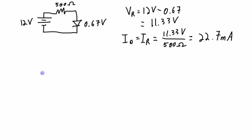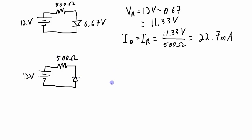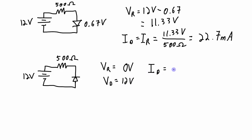What if we have a reverse biased diode? Same circuit, but with the diode turned around. In this case, there will be no current in the circuit because the diode acts like an open. The voltage across the resistor is 0 volts, the full 12 volts appears across the diode, and the current through the diode is 0 milliamps.